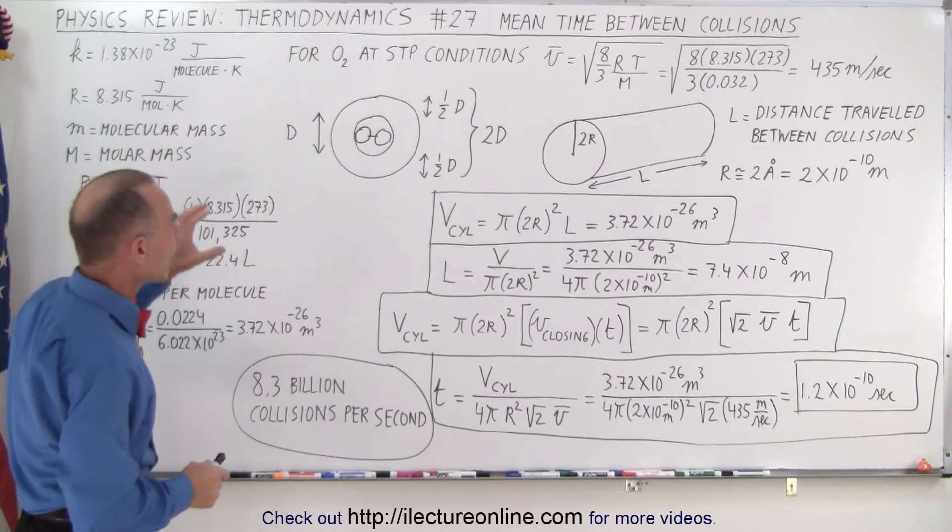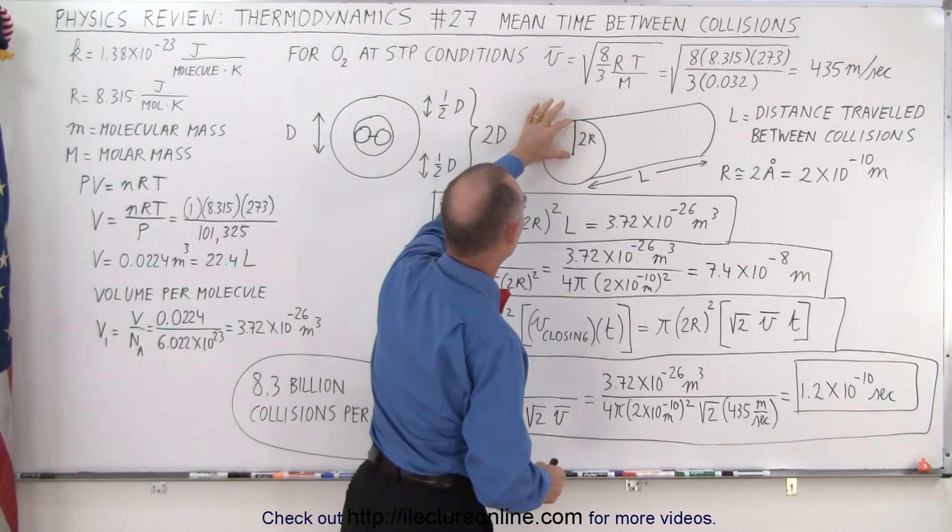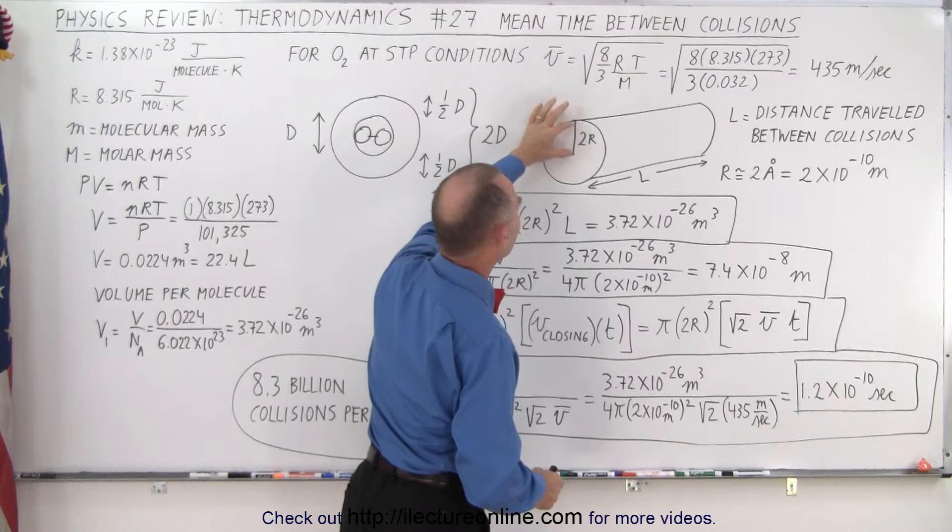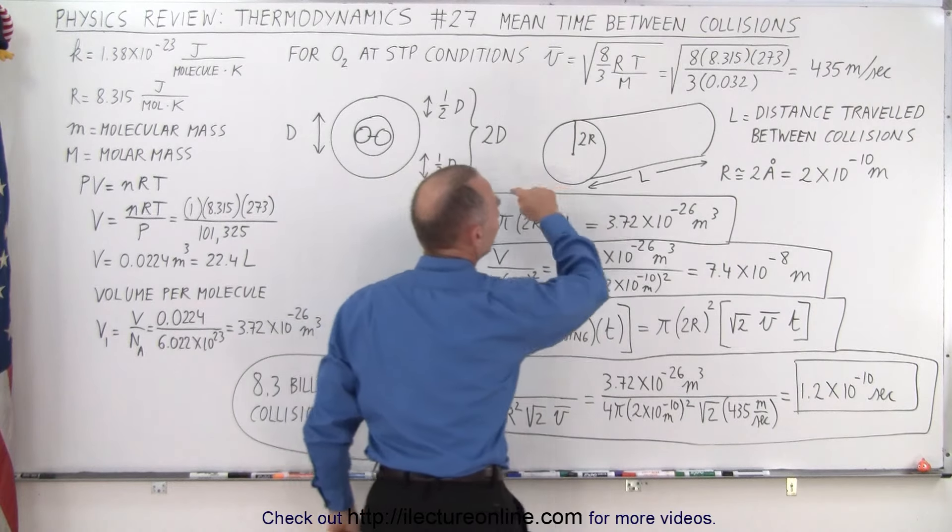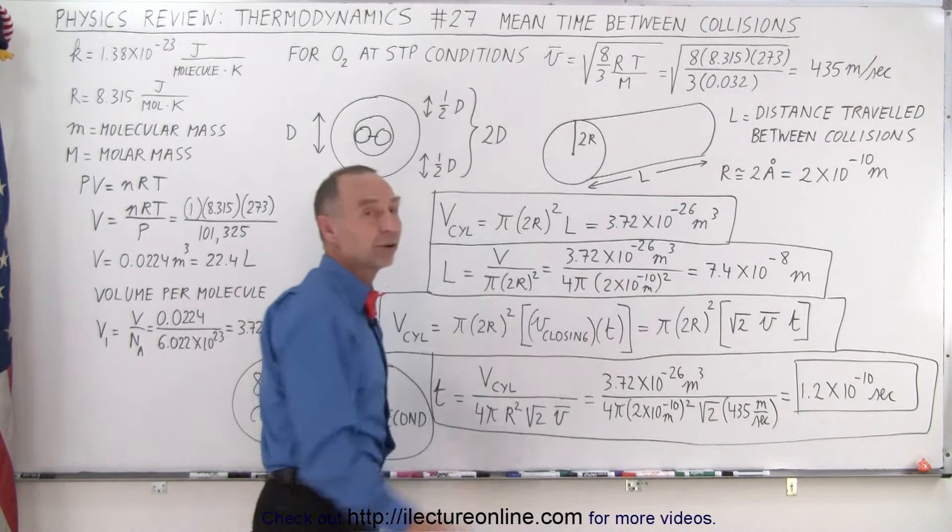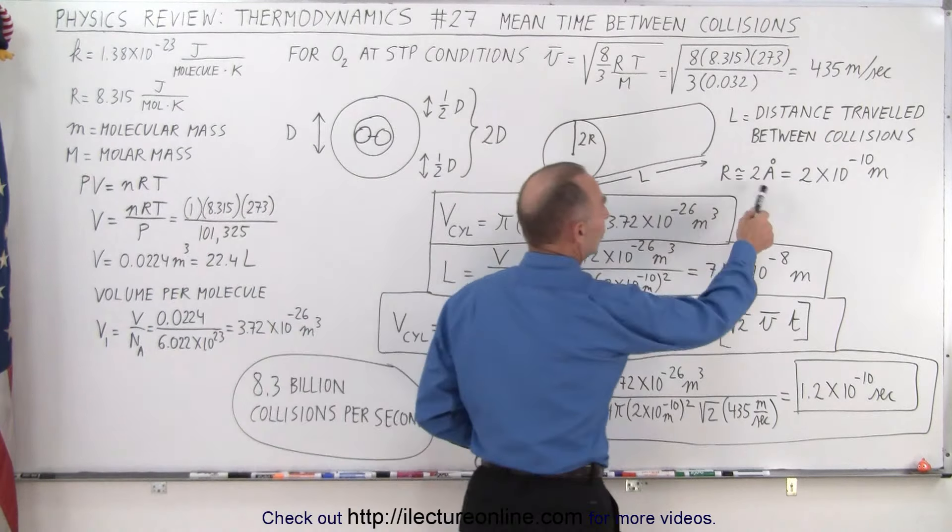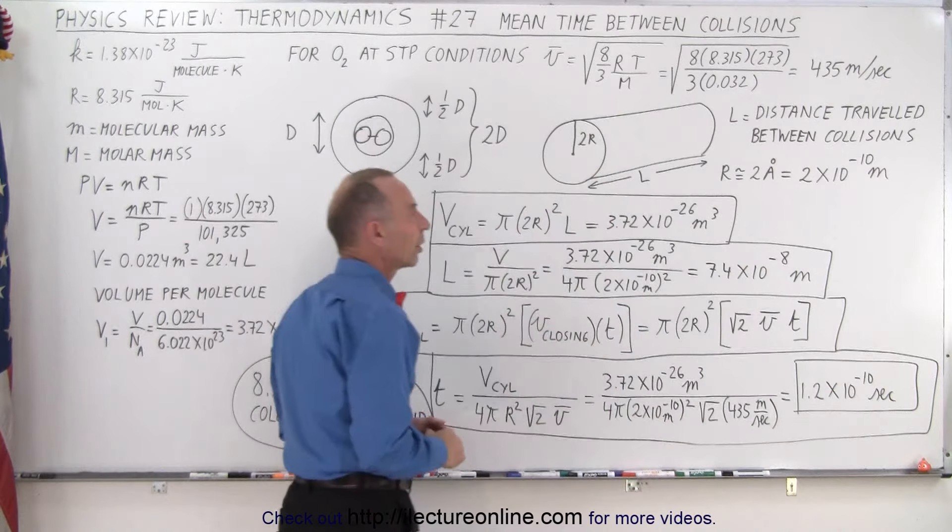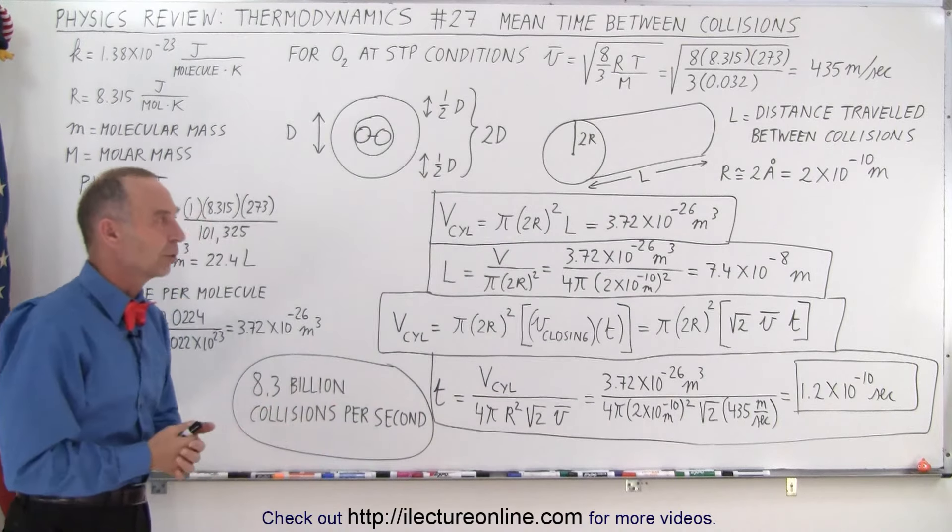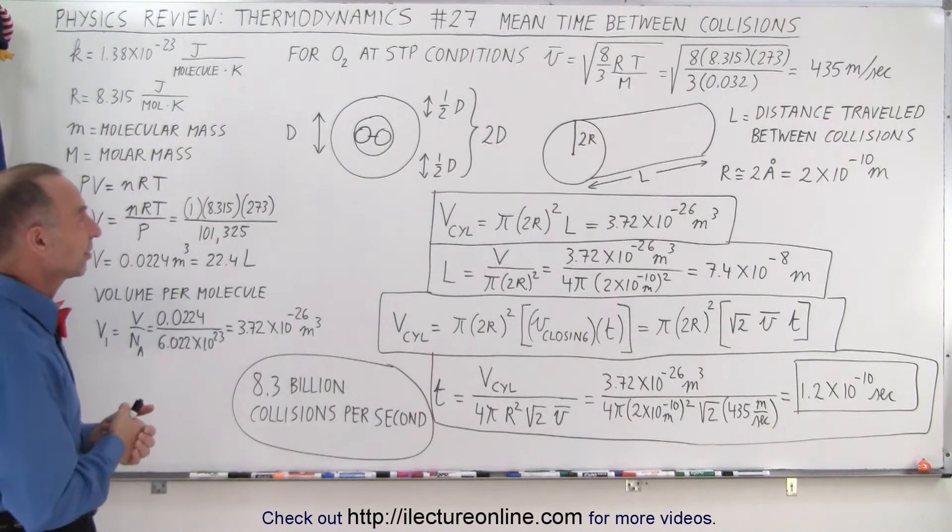So it'll travel through this cylinder, 2R of course, that's equal to twice the radius of a single molecule, and that would be the length of travel before it ends up colliding. So here that's the typical radius of one of those molecules, 2 angstrom. So that would be 2 times 10 to the minus 10 meters.